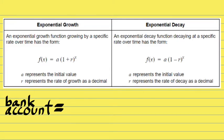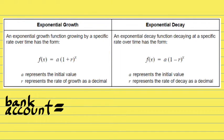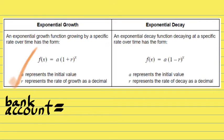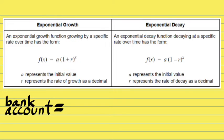We're going to teach this with a standard example of a bank account. On the exponential growth side, we have the variable A, which is your initial value, and then the value of R, which is the rate of growth as a decimal.